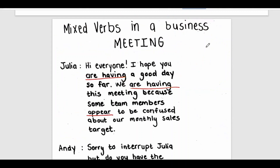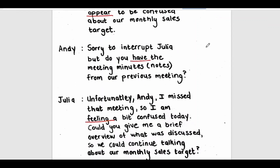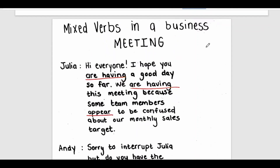To help you understand the differences in meaning between a continuous verb with -ing and a stative verb with no -ing, I'm going to go through a business meeting. You will see examples that are underlined and I'm going to show you the differences in meaning. Let's read through this business meeting — you can read along with me and also practice pronunciation. Julia, Andy, and Rico are the three people in our meeting today.